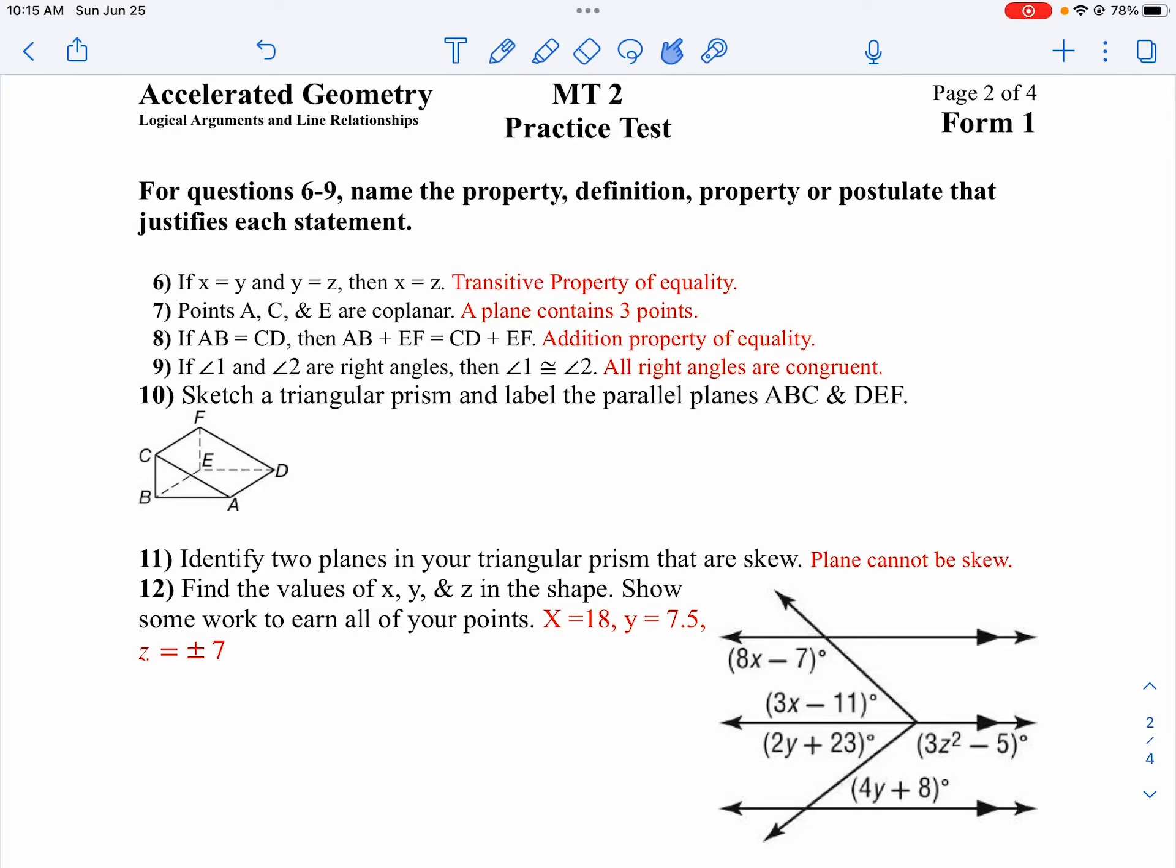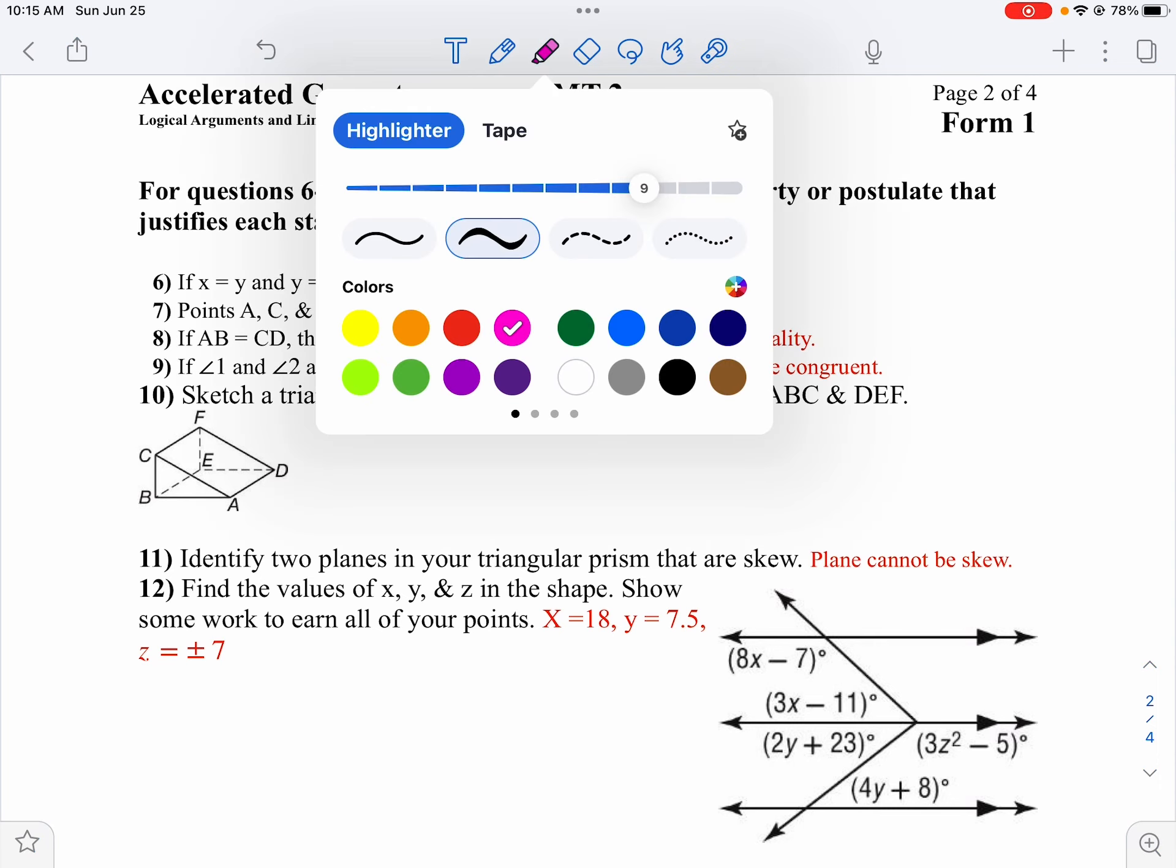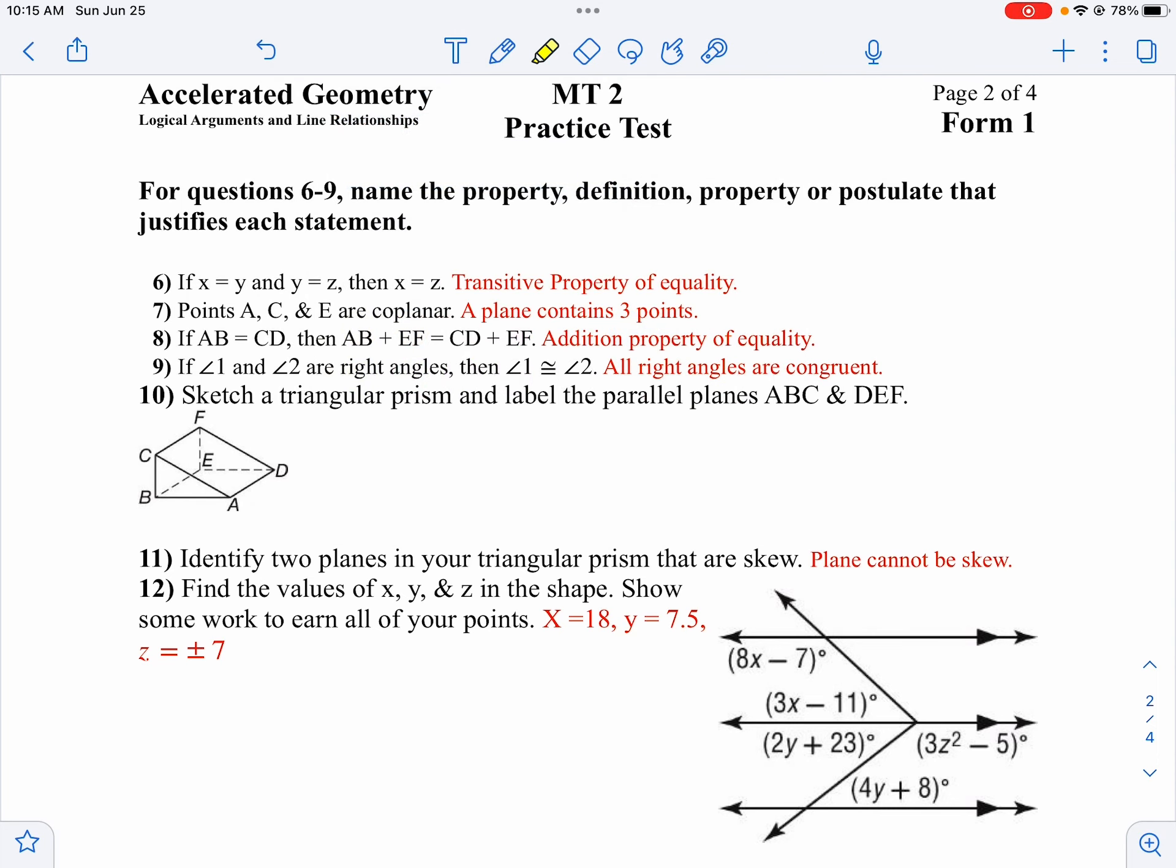On page 2 of our practice test, we want to identify the property, definition, or postulate that justifies each statement. On number 6, if x equals y and y equals z, then x equals z. That's our transitive property because when all three things are equal, that's our transitive property.